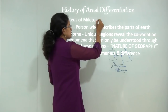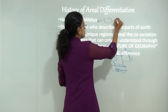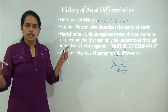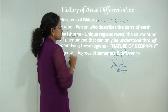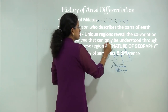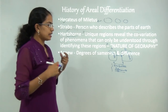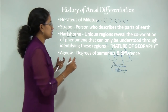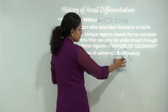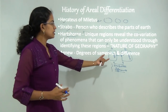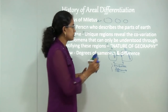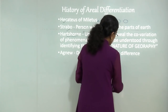Then there was Strabo who tried to describe the various parts of earth. Then came Hartshorne. As per the basic definition that Hartshorne gave, he explained that each area is unique and that is revealed by the covariation that exists not only between the regions but that also helps to identify each region and how that region can be understood with respect to other regions.